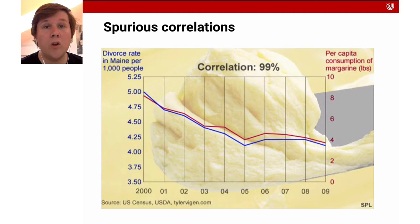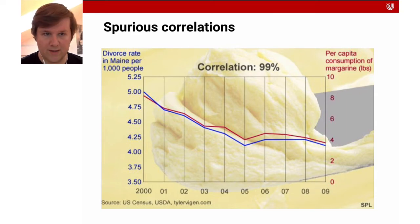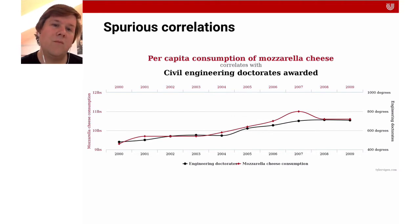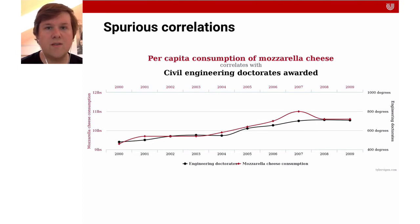Here's another example that I think is quite funny. In blue we have the divorce rate in the US state of Maine per 10,000 people, and we have the amount of margarine consumed — and you can see they're very, very closely related. Another example is the consumption of mozzarella cheese and the number of civil engineering doctorates awarded. But I don't think eating more pizza will produce more civil engineering PhDs. There's not really a causation — one thing is not causing the other — but there is a correlation.